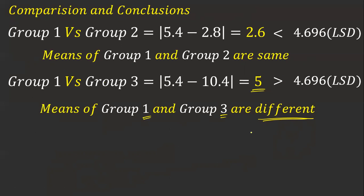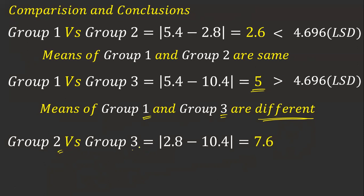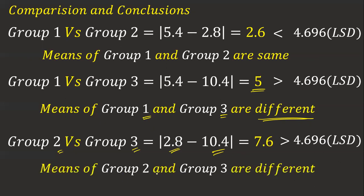Similarly, I compare group 2 and group 3. The mean of group 2 and mean of group 3 give a difference of 7.6. Since 7.6 is greater than 4.69, we conclude means of group 2 and group 3 are different. Now checking: group 1 equals group 2 (not significant), group 1 and group 3 are not equal, and group 2 and group 3 are not equal. So clearly I can say group 3 is having a different mean — that is how I find which group is best. This is how your post hoc test is done.